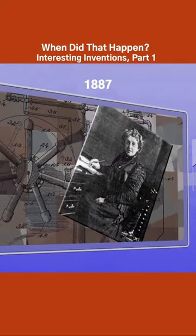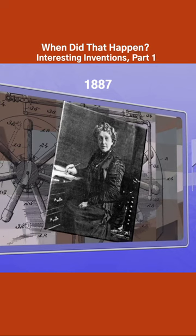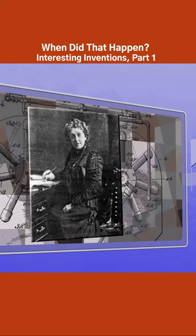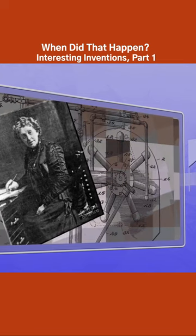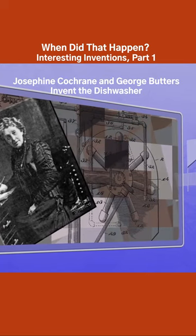1887. The first reliable, though hand-powered dishwasher is invented in 1887 by Josephine Cochran with the help of George Butters and unveiled at the 1893 Chicago World's Fair.